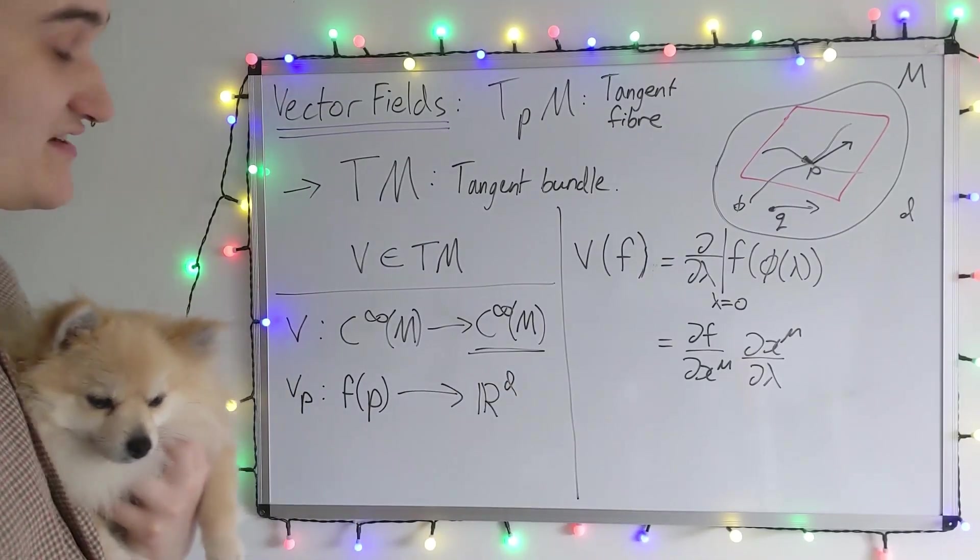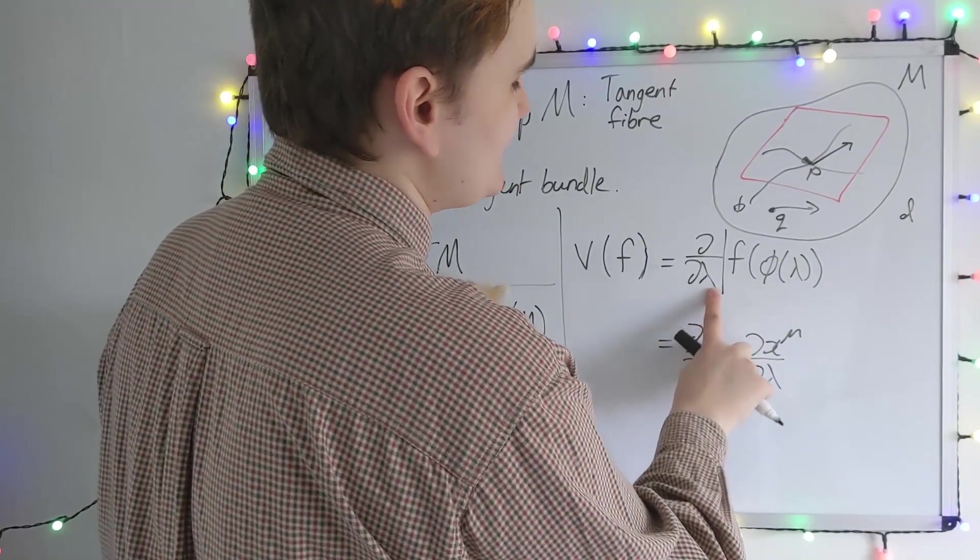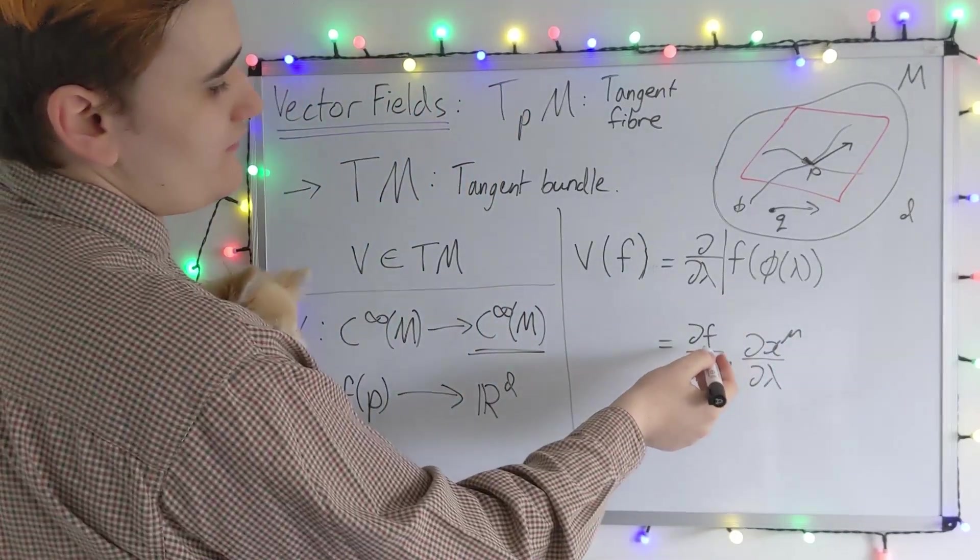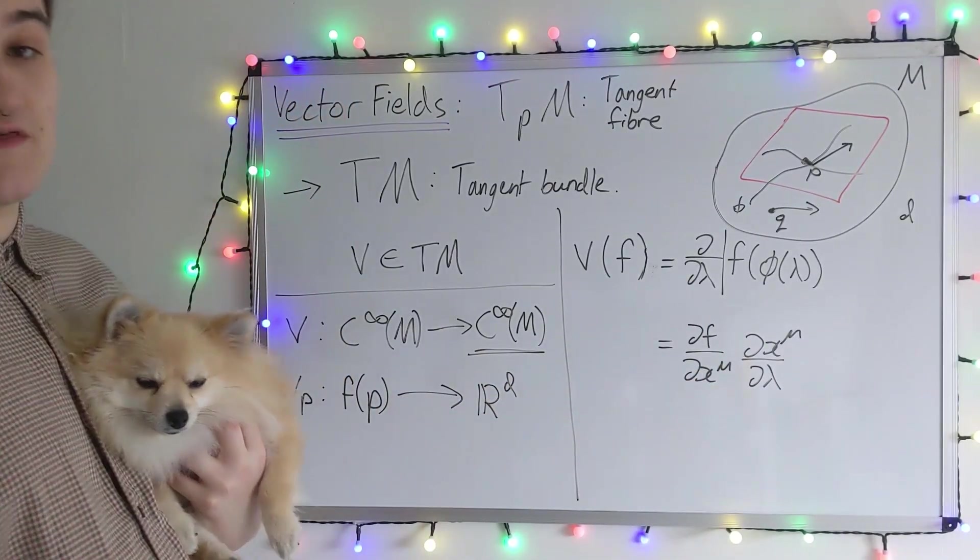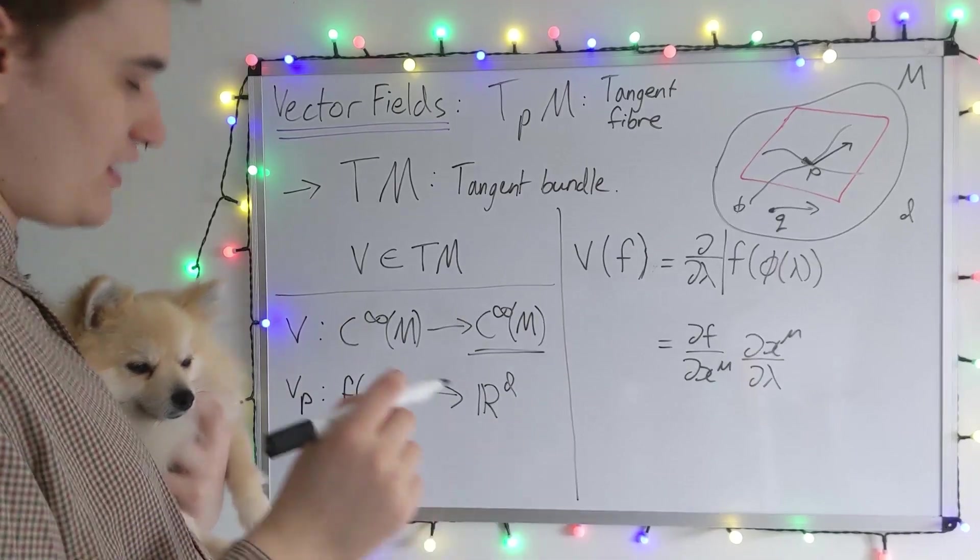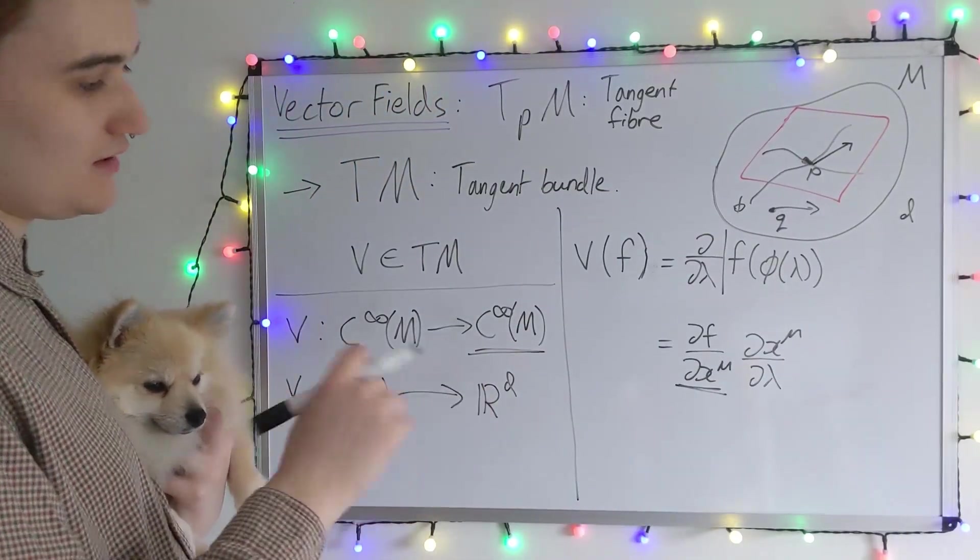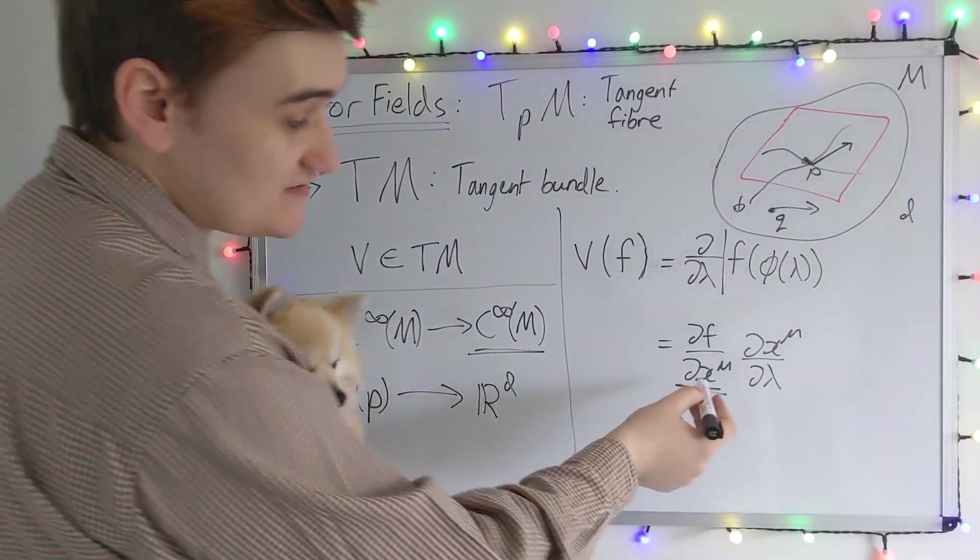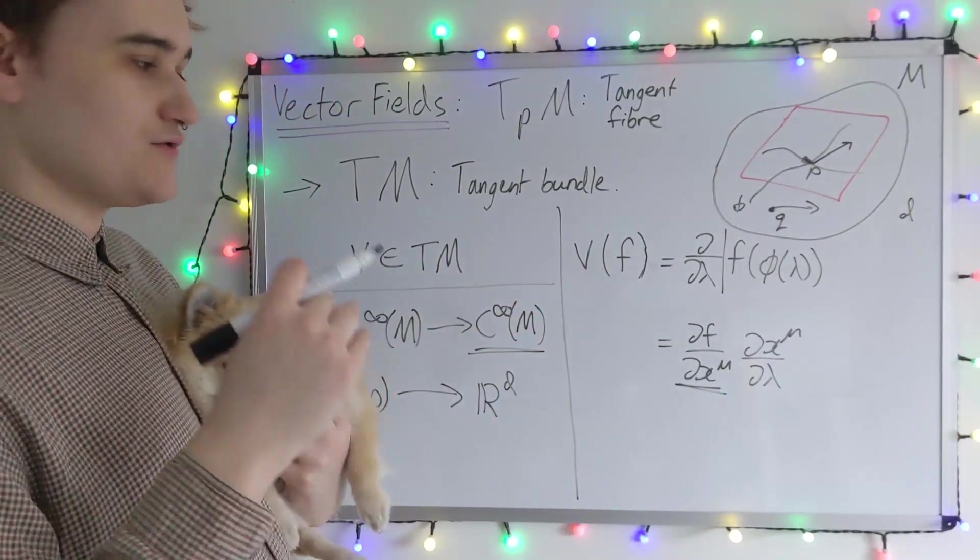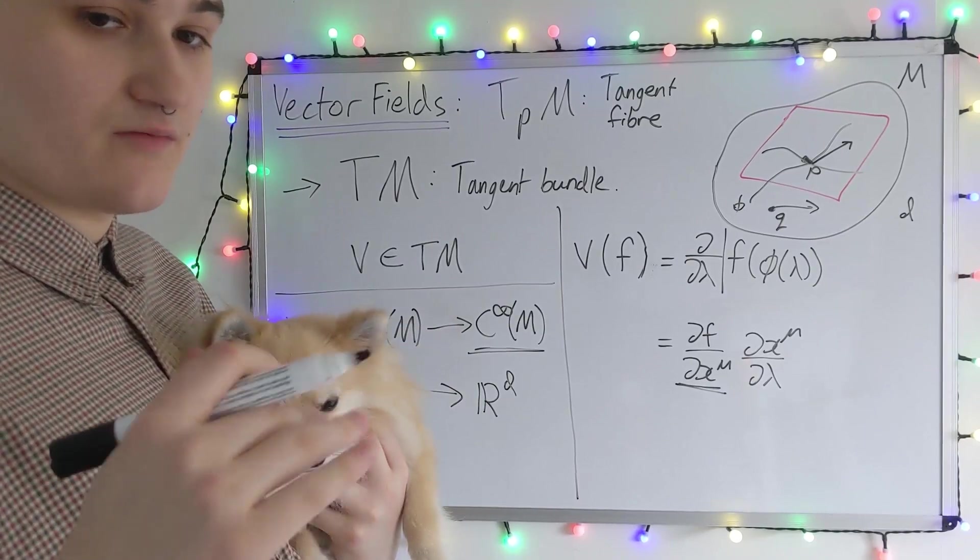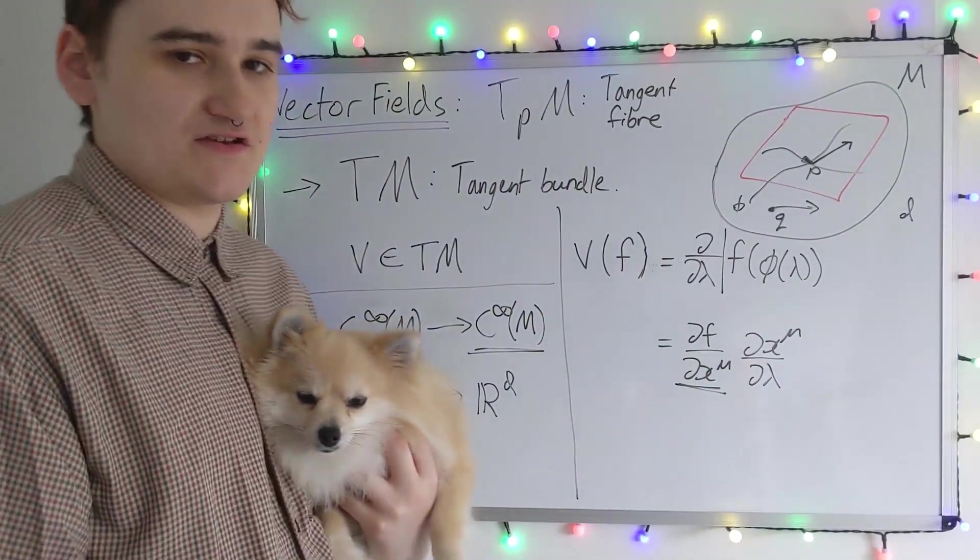All we need to do to extend this general definition to a vector field is just stop evaluating at the point in question, and consider the partial derivative basis as acting on the entire function. To do this, I left implicit, but we're required that this coordinate is valid everywhere on the manifold, or it covers the whole manifold. If it doesn't cover the whole manifold, that's still okay. We just need to make sure that where two coordinates overlap, the vector has to agree on overlapping charts.